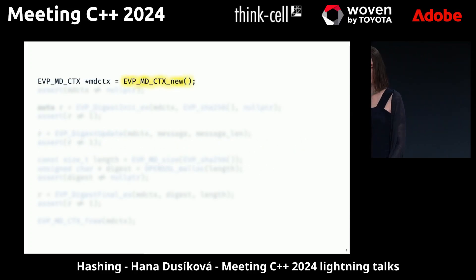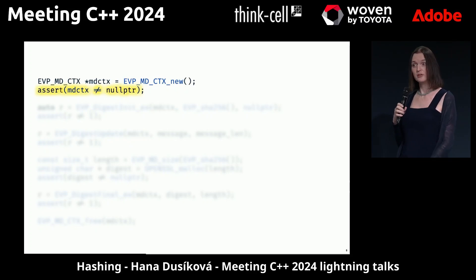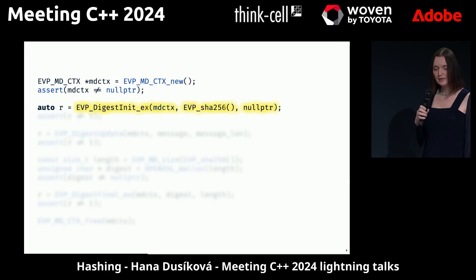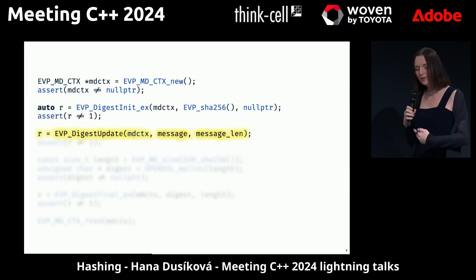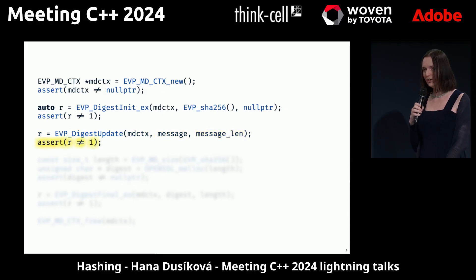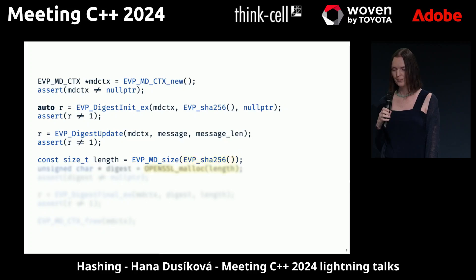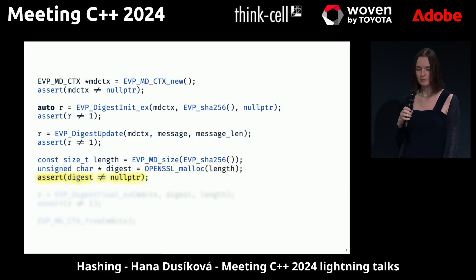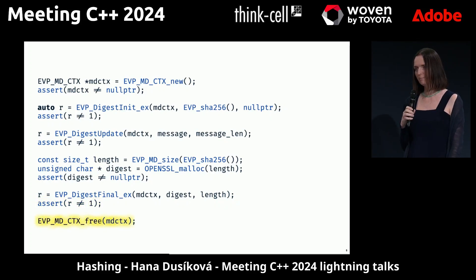The new interface is better — you need to allocate. This function will allocate any message digest function. You need to check if it's not a null pointer because it can fail. You initialize SHA256 and need to check the return code — in this case it must be one. You update it with your message, check the result code again. You look at the size of the hash itself, allocate output for the digest, check if it didn't fail, and then finalize it. Check again. And it's just a mathematical operation which shouldn't need an allocation and it shouldn't fail. And then you need to free it. Is it better?